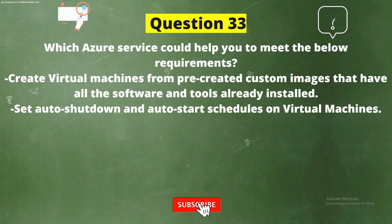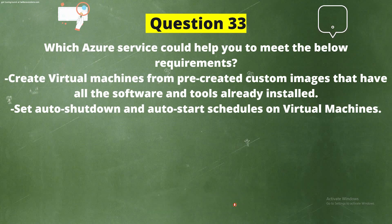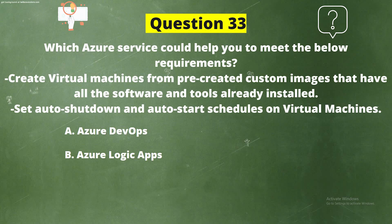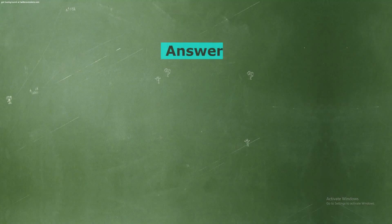Question 33: Which Azure service could help you to meet the below requirements — create virtual machines from pre-created custom images that have all the software and tools already installed, and set auto-shutdown and auto-start schedules on virtual machines? The options are: Option A, Azure DevOps; Option B, Azure Logic Apps; Option C, Azure Functions; Option D, Azure DevTest Labs.